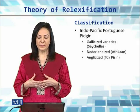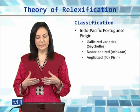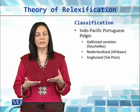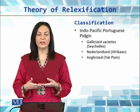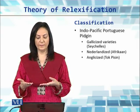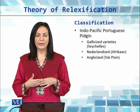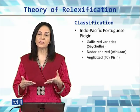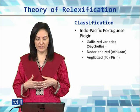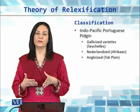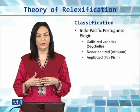Similarly, some Indo-Pacific Portuguese pidgins include some Gallicized varieties, meaning French varieties. These Indo-Pacific Portuguese pidgins further branched into French varieties, for example the variety used in Seychelles and Australia. Then we have Nederlandized varieties, for example Afrikaans, which is used in South Africa. And then we have an Anglicized variety — an English-based pidgin called Tok Pisin, which is used in Papua New Guinea.